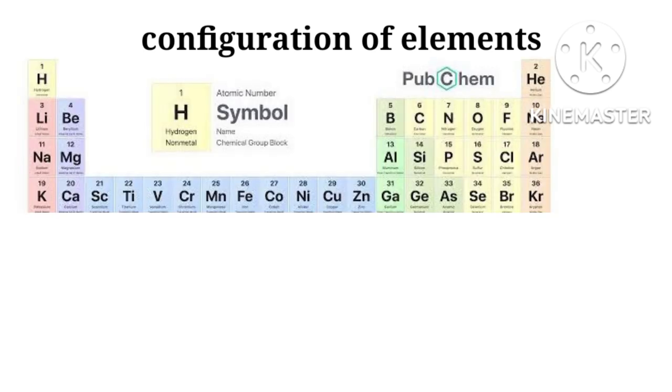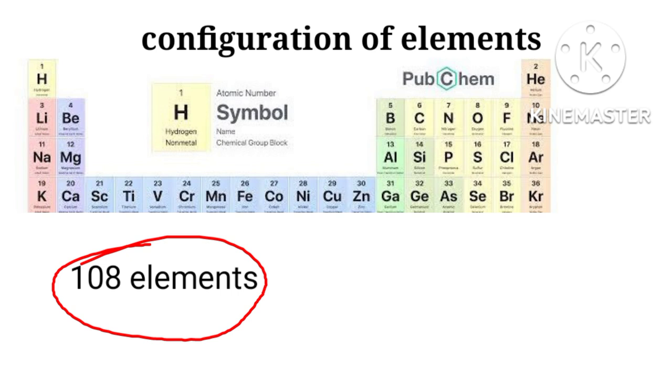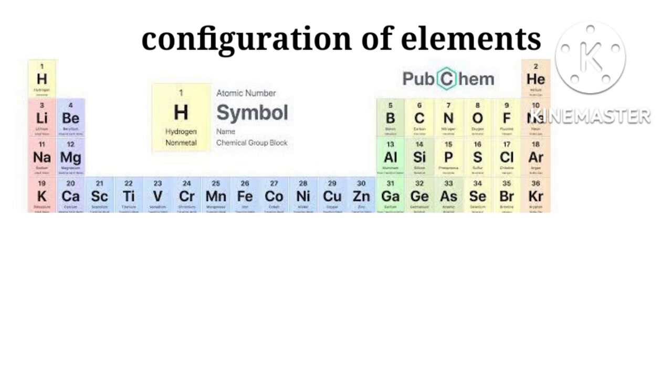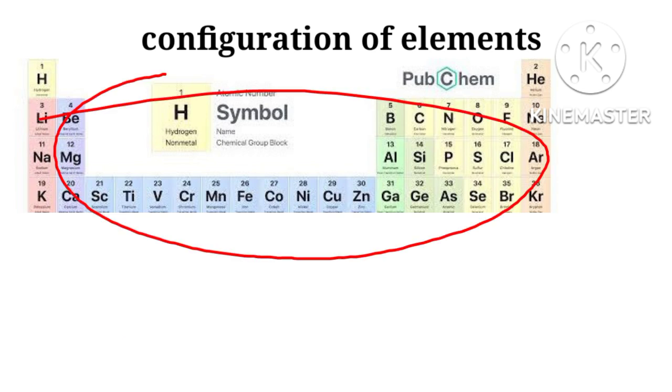In the modern periodic table there are 108 plus elements. 80% are metals and rest 20% are non-metals. We shall deal here with only the first 20 elements.